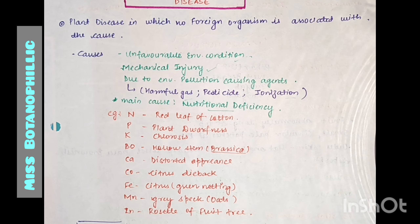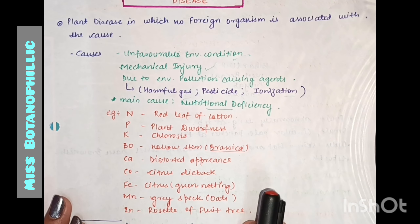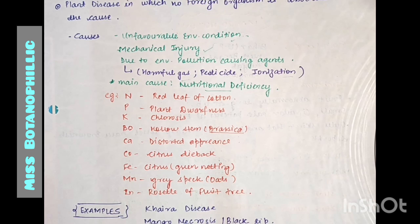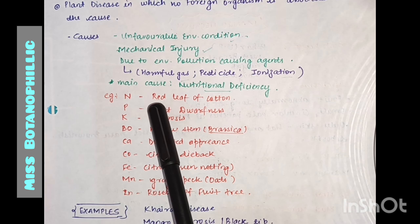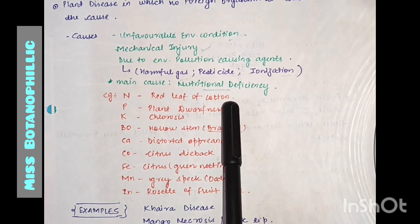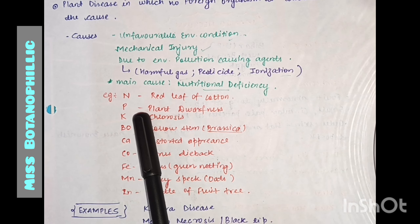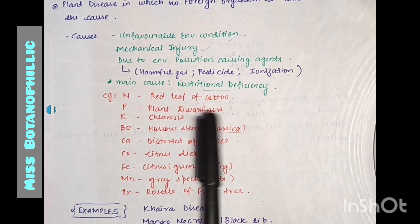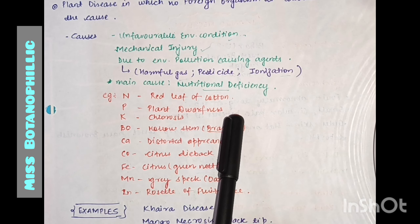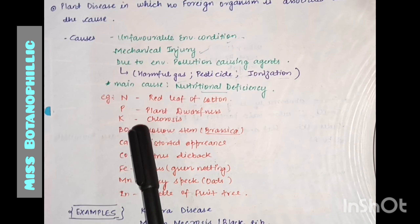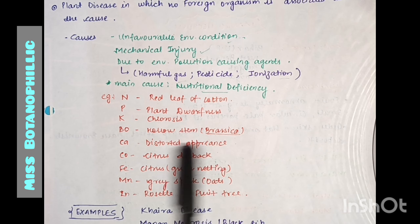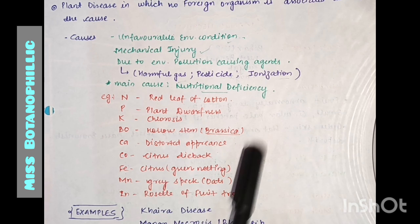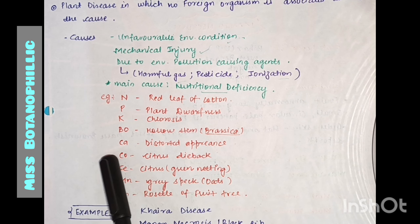There are different types of nutritional deficiency with several examples. For example, nitrogen deficiency causes red leaf of cotton. Phosphorus deficiency causes dwarfness. Potassium deficiency causes chlorosis. Boron deficiency causes hollow stem, which we get to see in brassica and mustard.